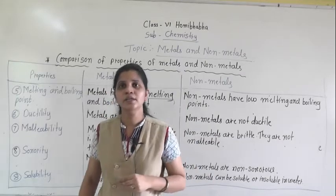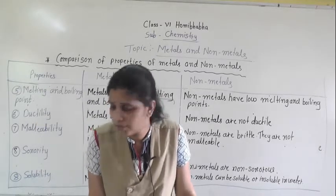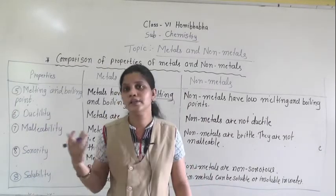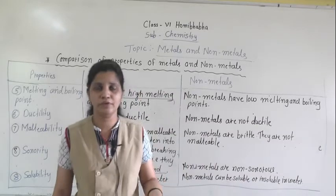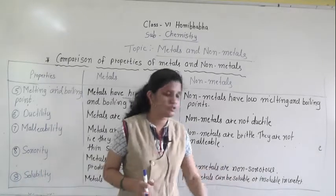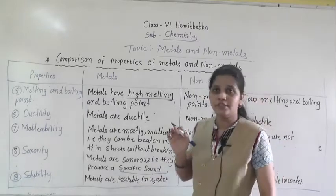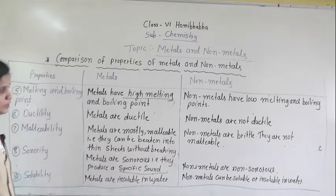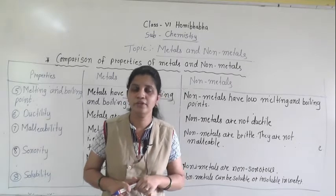The ninth property is solubility. Solubility means which can be dissolved in water. Metals are insoluble in water and in any other solvent. Non-metals can be soluble or insoluble — some non-metals are soluble in water and solvents, and some are insoluble. This is the difference between metals and non-metals. After this period, write all this information in your chemistry notebook. We will continue with the next point — the uses of metals — in our next period. Thank you.